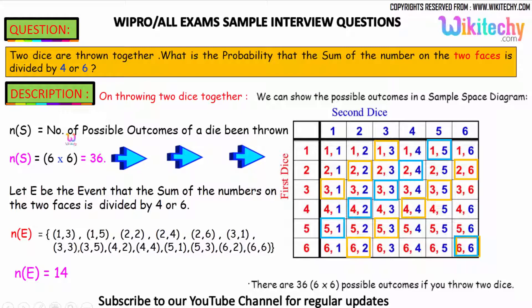The number of possible outcomes when a die is thrown is 6. The total sample space is 6 × 6 = 36 combinations. Now for the event where the sum is divisible by 4 or 6.